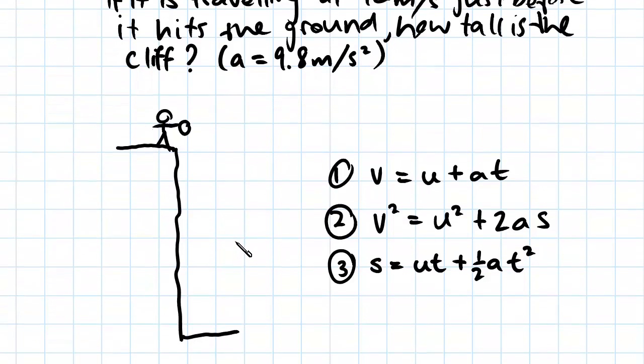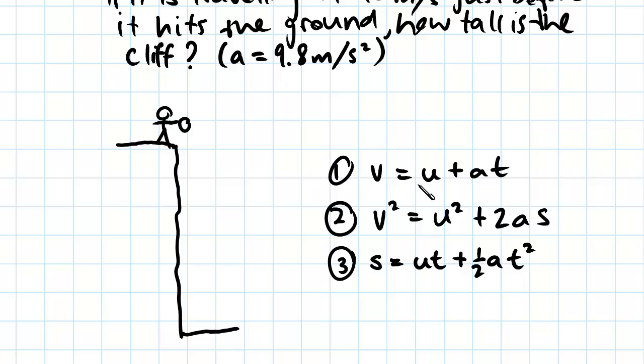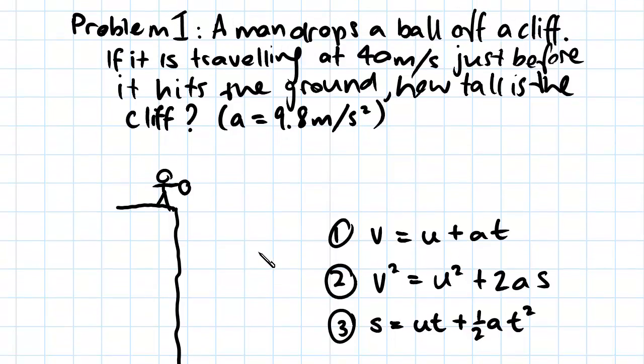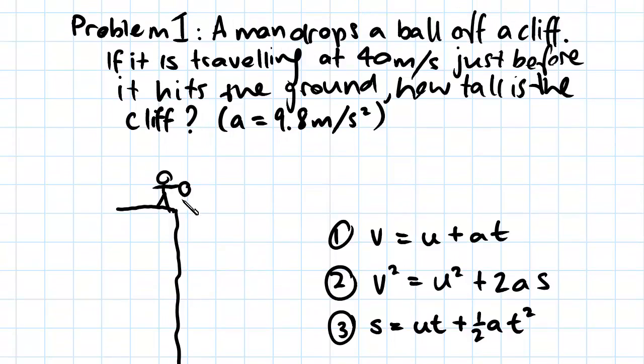If we look at equation one, we know the final velocity, the initial velocity, and the acceleration. We don't know the time. Also, what we're after in this question is displacement, so we're after a height, that's a distance. The first equation does not have a distance in it, so we're not going to be using that one.